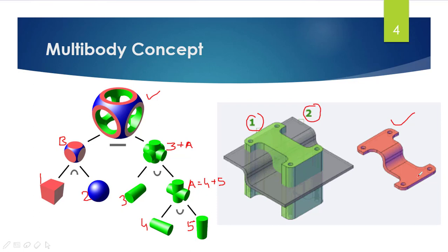Whatever complex shapes you need, you can get the result by creating easy sketches or easy shapes. We will be creating easy shapes to get the complex result — this is what your multi-body concept is. The same we will see in the software. Let us have a look at the multi-body concept in CATIA V5 software, covering how to create multiple bodies, how those bodies behave, where exactly to create them, and then copy-paste and copy-paste special of those bodies.